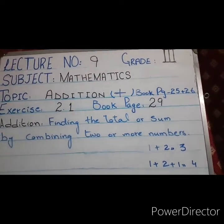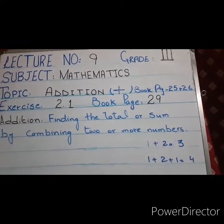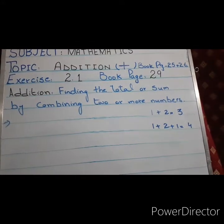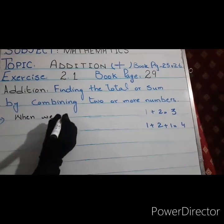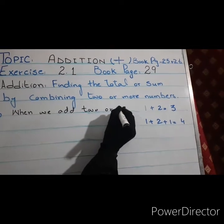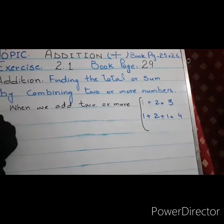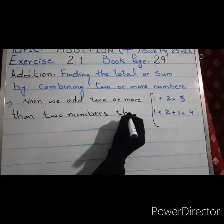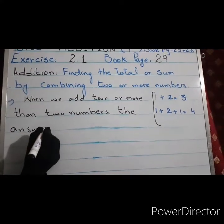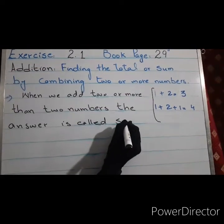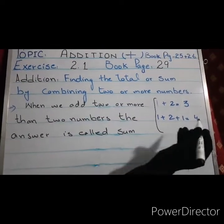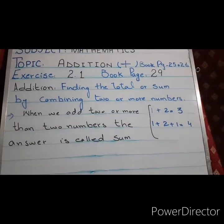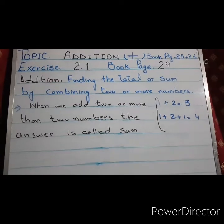This is simple addition, and you learned about simple addition in class prep. Remember, students: when we add two or more than two numbers, the answer is called sum. In simple words, the addition answer is called sum. When we add two or more than two numbers, the answer is called sum.